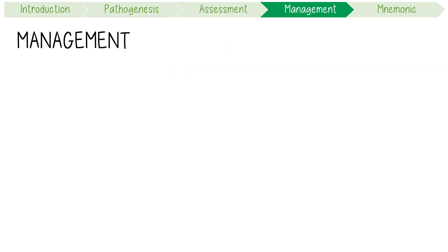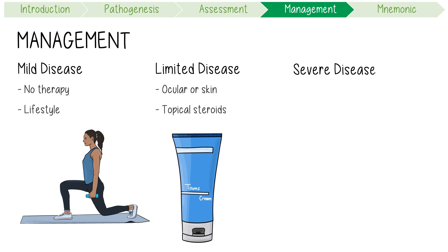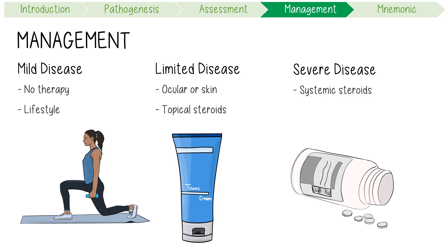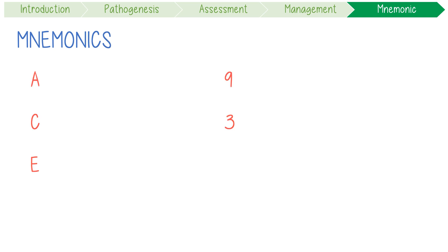Management of sarcoidosis is based on the level of symptoms and disease extent. In mild symptoms, no specific therapy may be warranted other than lifestyle changes. Limited ocular or skin manifestations might benefit from topical steroids. Severe disease might benefit from systemic therapy using steroids or immunomodulating agents like methotrexate.